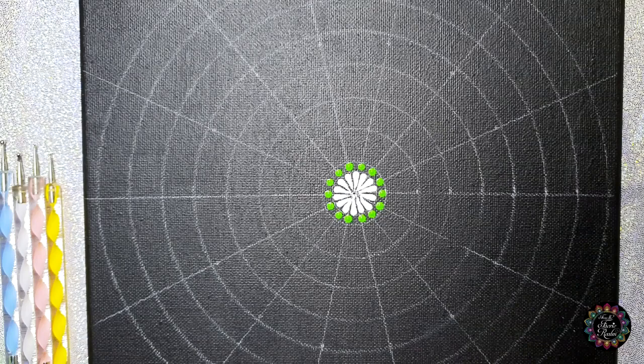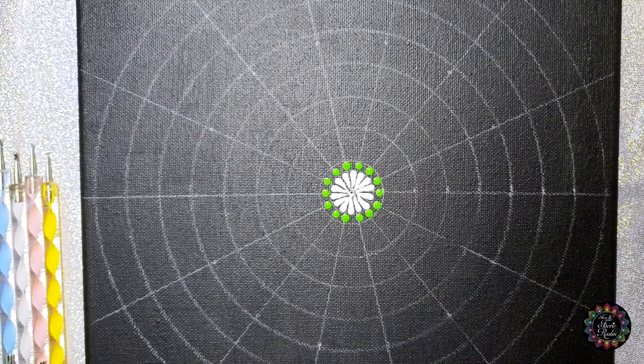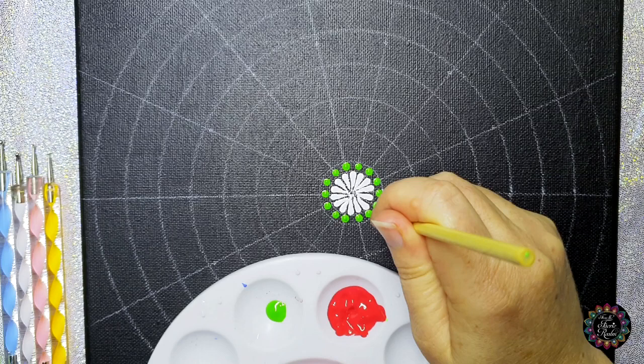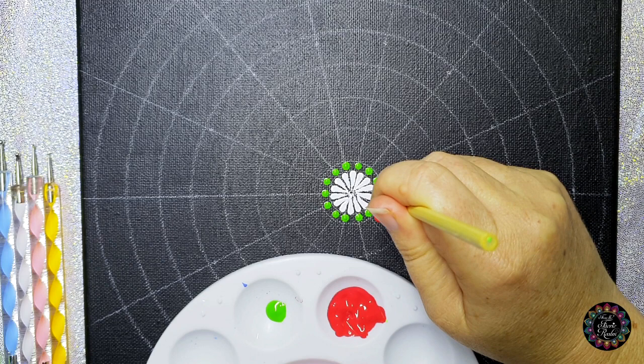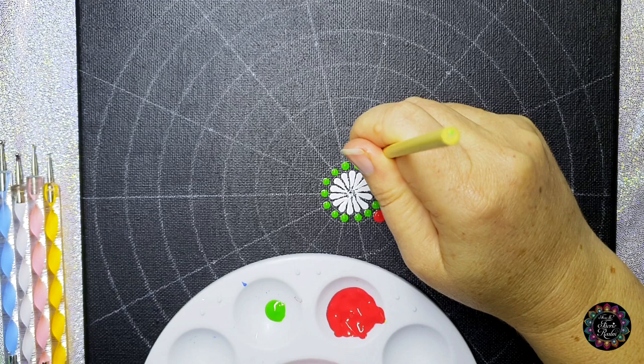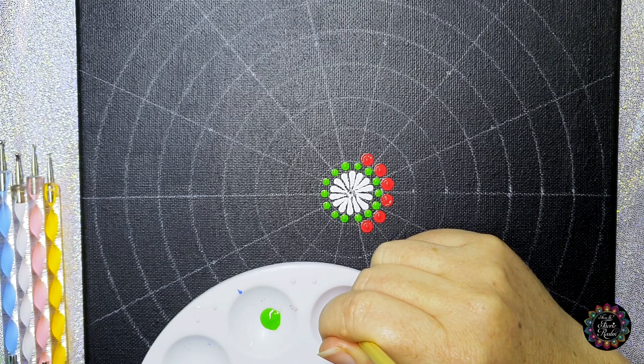Next we're going to take our five millimeter tool and we're going to move on to color number four, which is your red. And you're going to do alternate spacing, so in other words in between each of the green dots you previously made. This is already starting to look like a magical field with flowers and ladybugs.